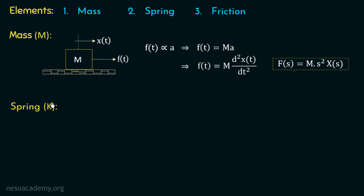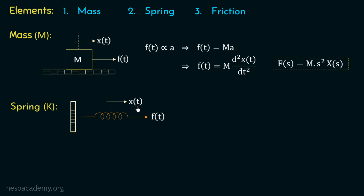Moving on to the next element, which is the spring. Let us consider a spring attached to a fixed support from one side, and on the other side we apply a force to elongate it to the right. There will be a displacement in the spring to the right. The spring will try to regain its original position by applying an opposing force, and that force is directly proportional to the displacement. So we can write f of t is proportional to x of t, and removing the proportionality we get f of t equal to k multiplied with x of t.